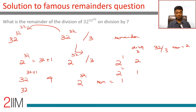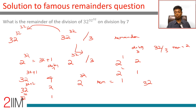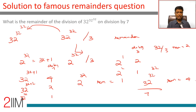So the remainder is 4 on division by 7. Since 32 power 32 divided by 3 gives remainder 1, 'a' is of the form 3k+1, meaning 4 power a divided by 7 gives remainder 4. Therefore, 32 power 32 power 32 divided by 7 — the remainder is 4. You can do this for any question, any step, any number of times; the idea remains exactly the same.